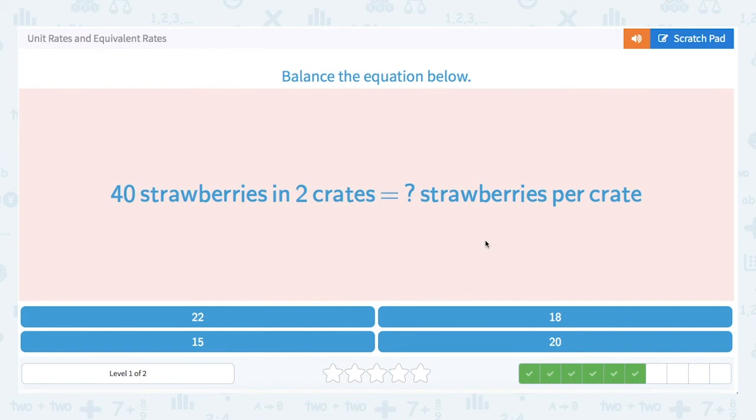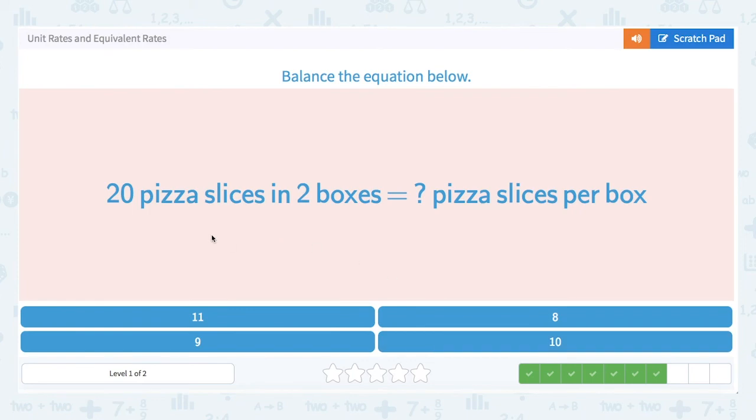40 strawberries in two crates equals how many strawberries per crate? So again, we're just taking this basket or container of 40 strawberries and dividing it up into two crates, meaning we divide 40 in half. And that is going to be 20, 20 per crate.